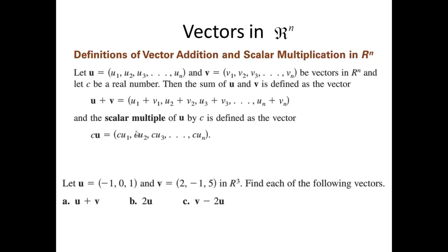Now, vectors in Rn — the n-dimensional plane. Here, we are not just talking about the XY plane or R2; we are talking about Rn. N could be 10, 20, or even 1,000. Let U be the vector in Rn defined by components u1, u2, u3, ..., un, and V be the vector in Rn defined by components v1, v2, v3, ..., vn. Then we define the sum U plus V as (u1+v1, u2+v2, ..., un+vn), i.e., component-wise addition.